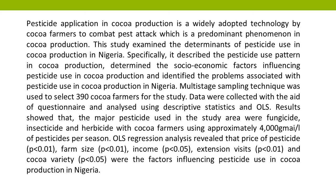Specifically, the study described the pesticide use pattern in cocoa production, determined the socioeconomic factors influencing pesticide use in cocoa production, and identified the problems associated with pesticide use in cocoa production in Nigeria. A multi-stage sampling technique was used to select 390 cocoa farmers for the study. Data were collected with the aid of a questionnaire and analyzed using descriptive statistics and OLS regression.